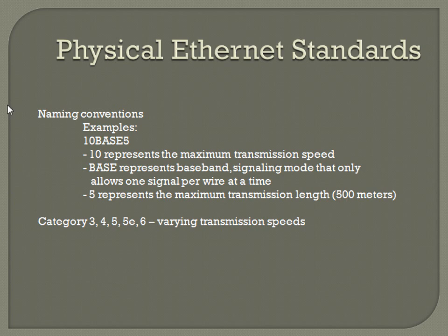You do have to be familiar with how the naming convention works. This example has 10Base5 — the 10 represents the maximum transmission speed, so 10 megabits per second. If you saw 100 there, it'd be 100 megabits per second; 1000 would be a gigabit per second. The 'base' represents the baseband signaling mode that only allows one signal per wire at a time — most of them are base. The 5 represents the maximum transmission length, in this case 500 meters. On 10Base2, you'd think 200 meters, but it's actually good for up to 185 meters — they round to 2.